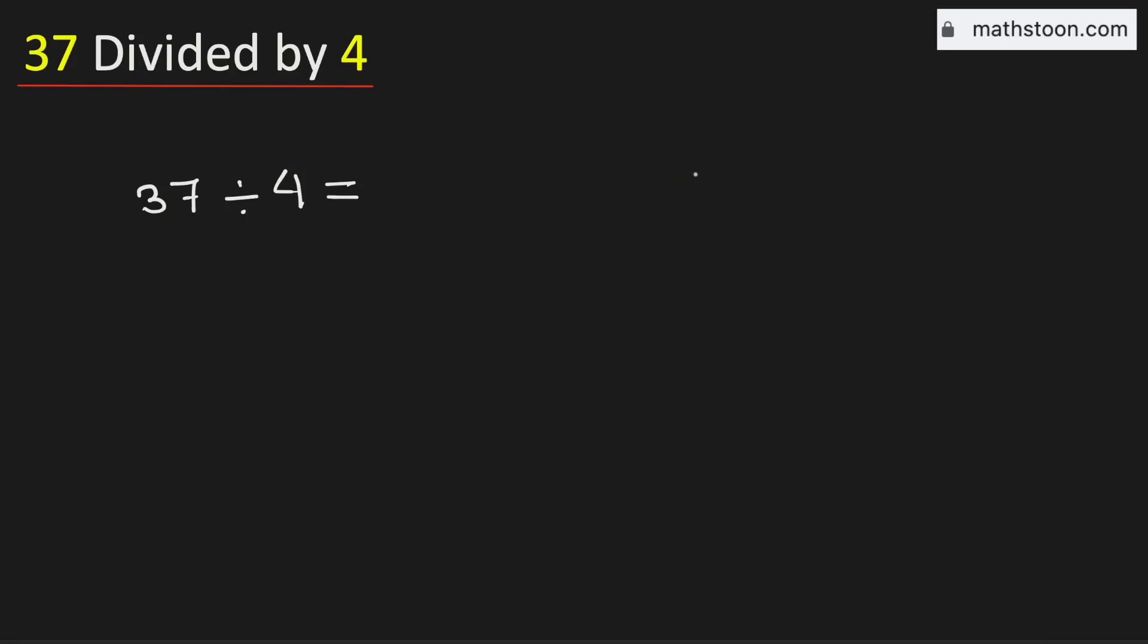In this video, let us learn how to divide the number 37 by 4 using the long division method. Consider the first digit 3. 3 is less than 4, that is why we will consider the whole number 37.